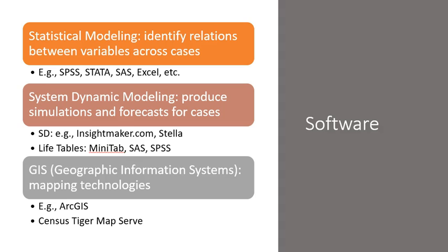For GIS, we have a number of packages. The dominant one in the field is ArcGIS, and then for instance the Census has its own GIS mapping component called the Census Tiger Map Service.